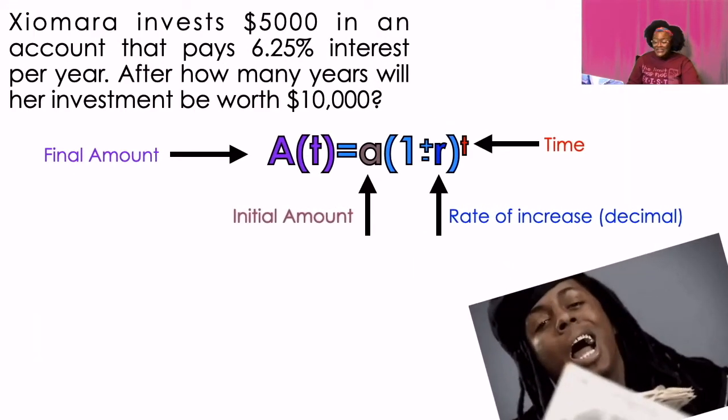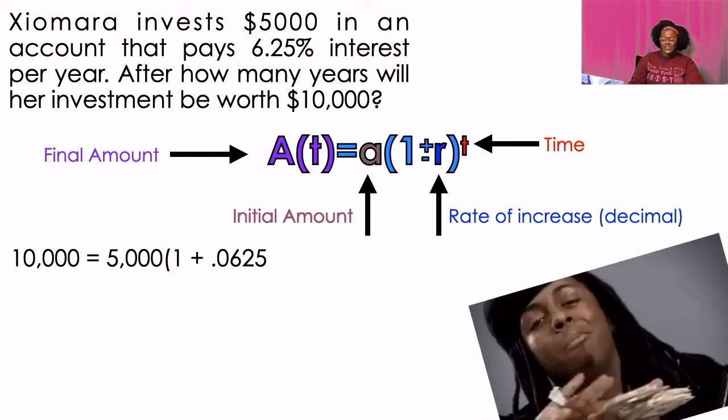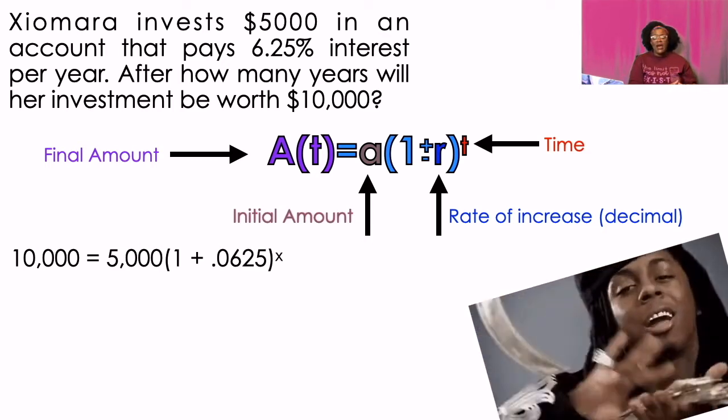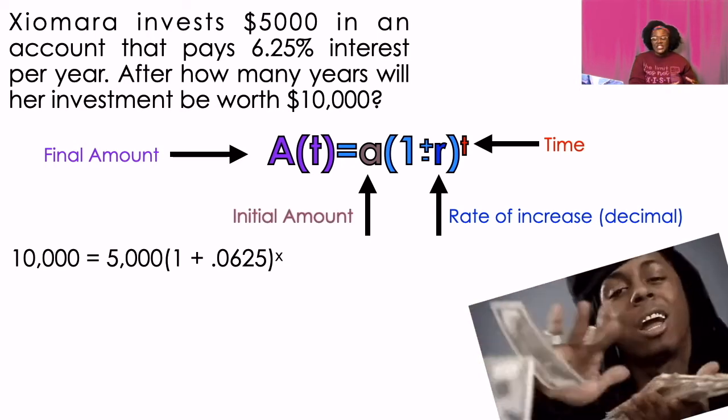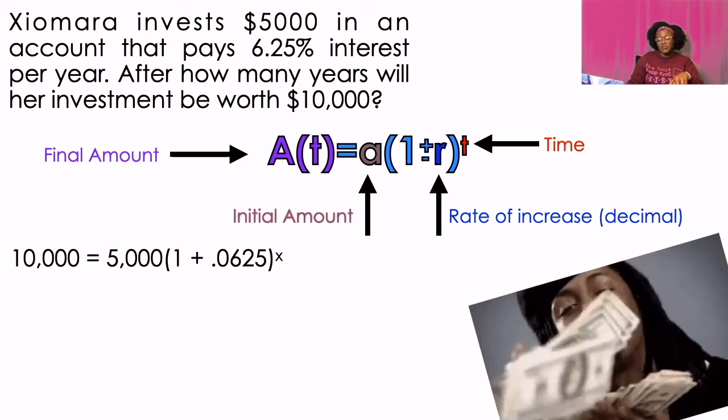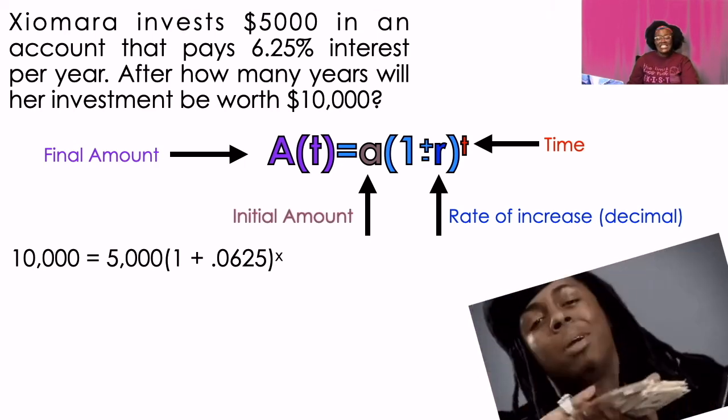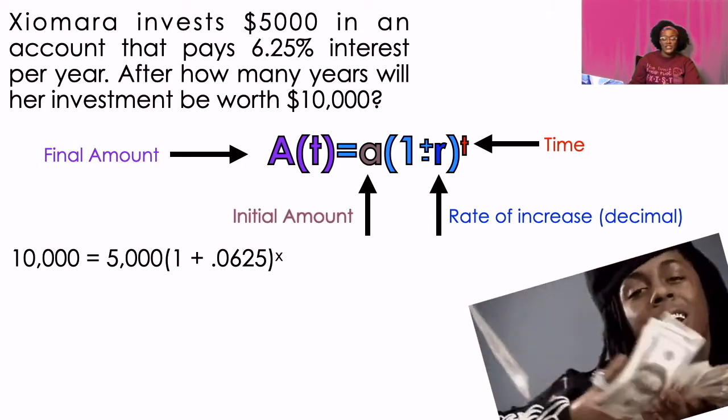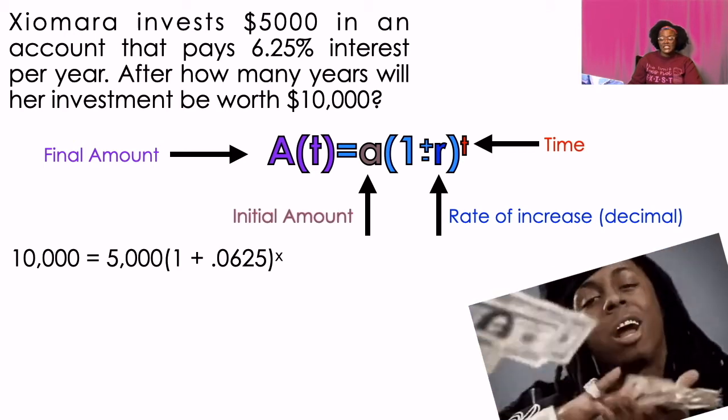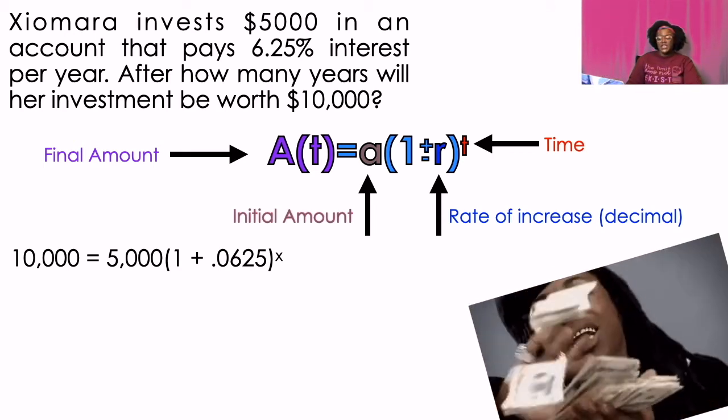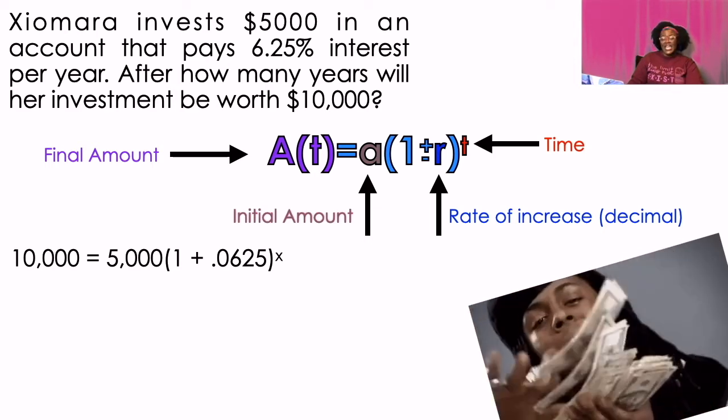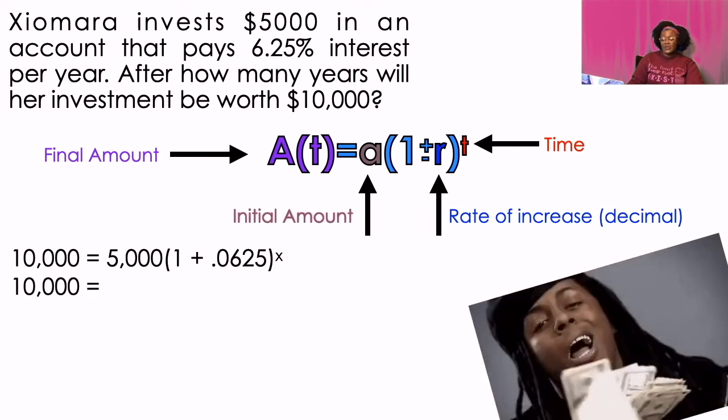So Xiomara invest $5,000 in an account that pays 6.25% interest per year. After how many years will her investment be worth $10,000? So this problem is a little bit interesting. So I already know in this problem, how much she's going to make. She's going to make $10,000. And she originally put $5,000 and the rate at which she's putting it in is 6.25%. But I'm changing that to a decimal by moving the decimal space over two spaces to the left. And I'm using the addition sign because I want to know how much it's growing. So the problem is, is I don't know how much time it's going to take for it to get there. And that is very good. So we have to find what that X one is going to be.